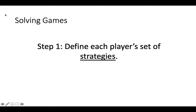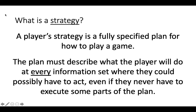Now that we have a framework for building models of games, we can start to think about how to solve them. The first step in solving a game is to define each player's set of strategies. A player's strategy is a fully specified plan of how they will play the game. The plan must include what to do at every possible information set where the player will potentially have to act, even if they never get to execute some parts of the plan. The best way to learn how to define strategies is with some examples, so let's do some examples now.